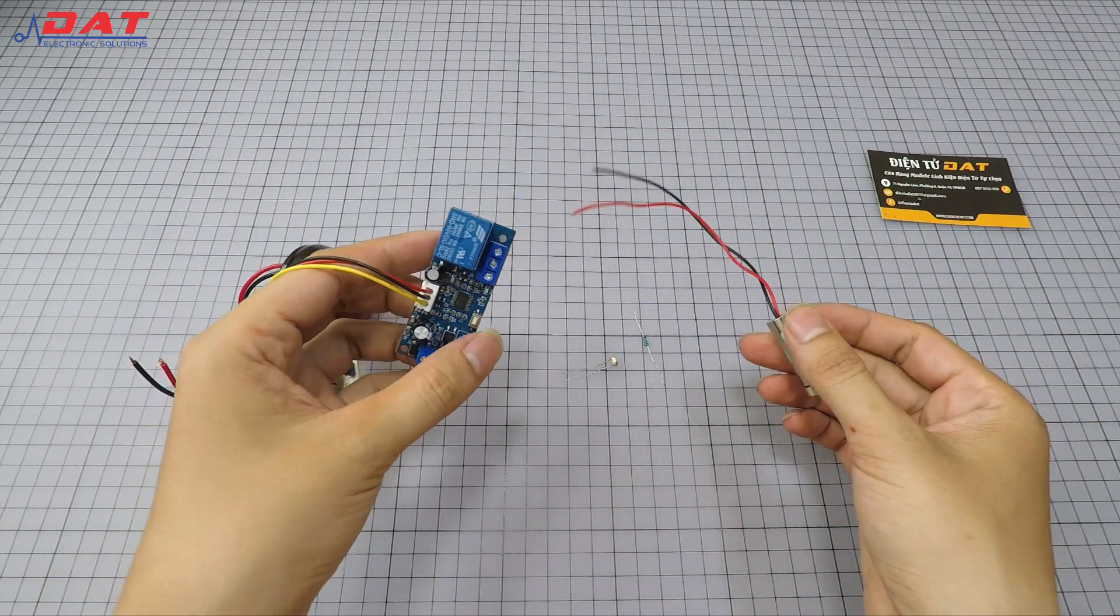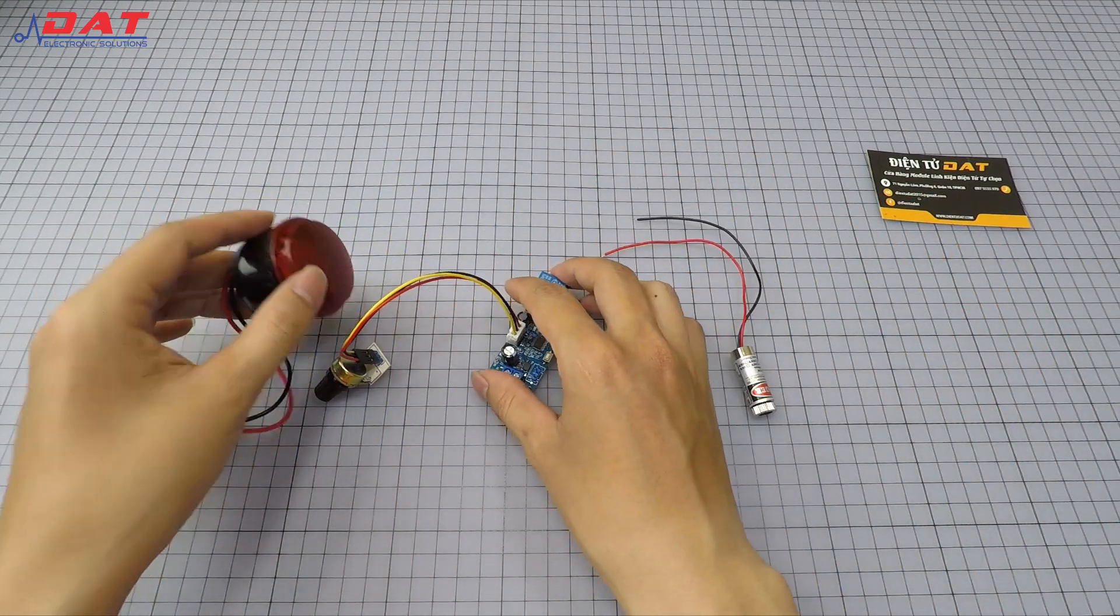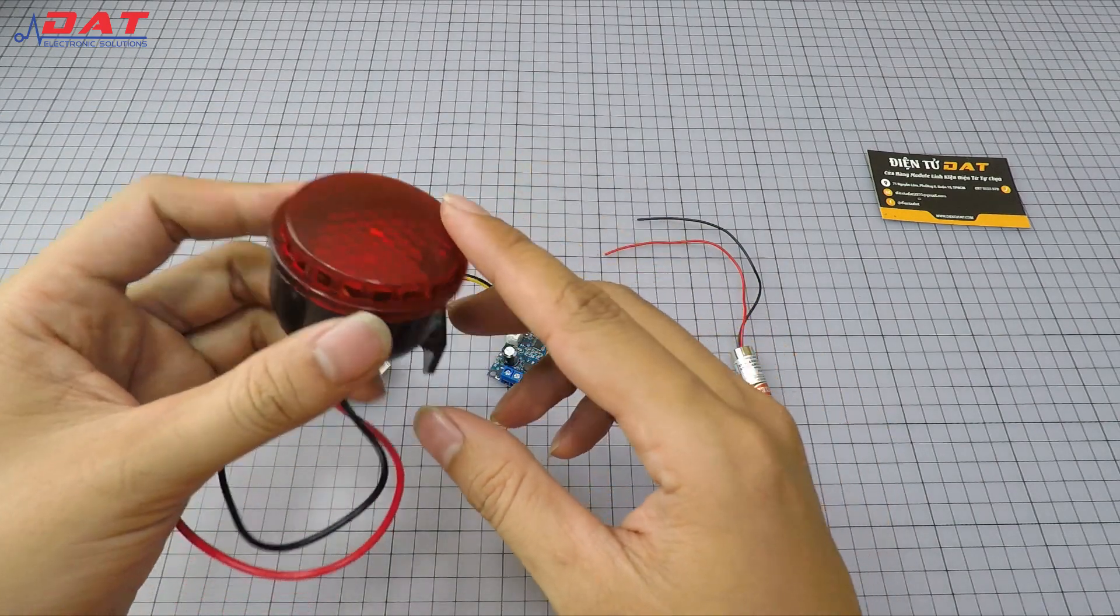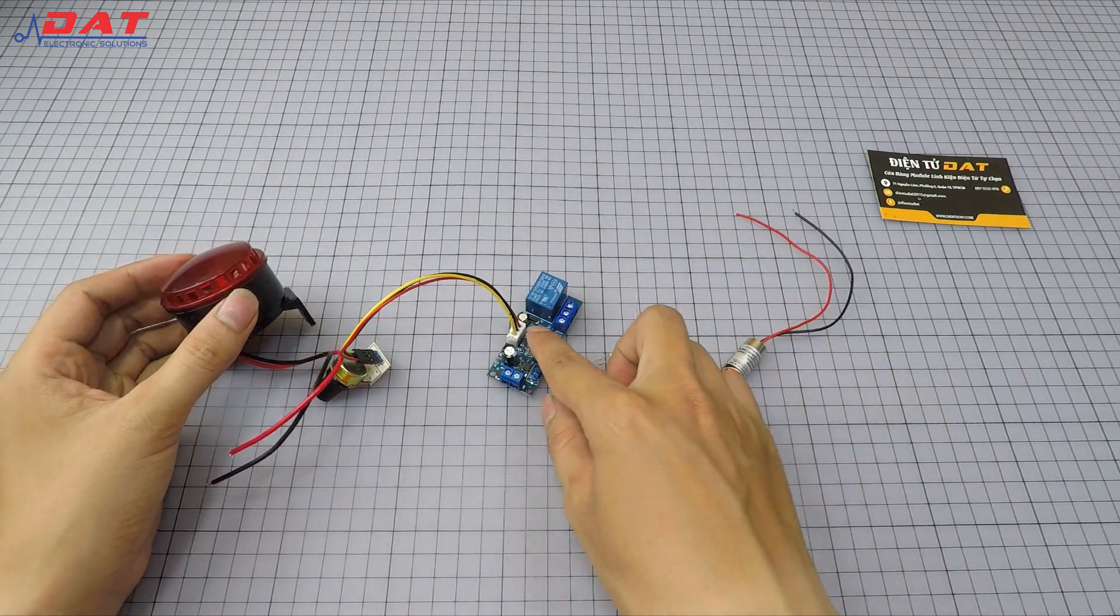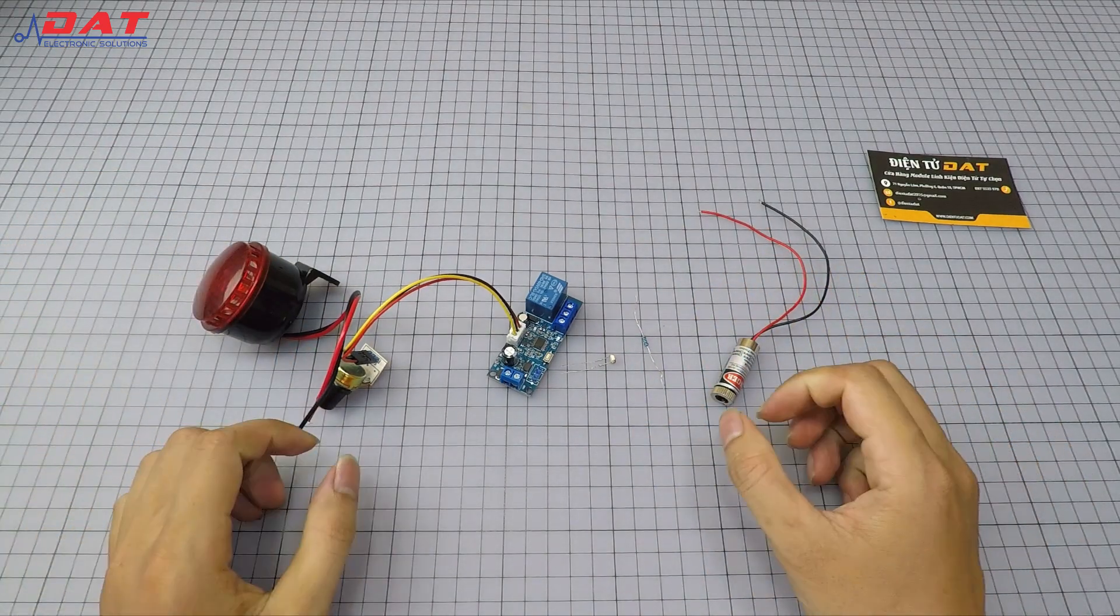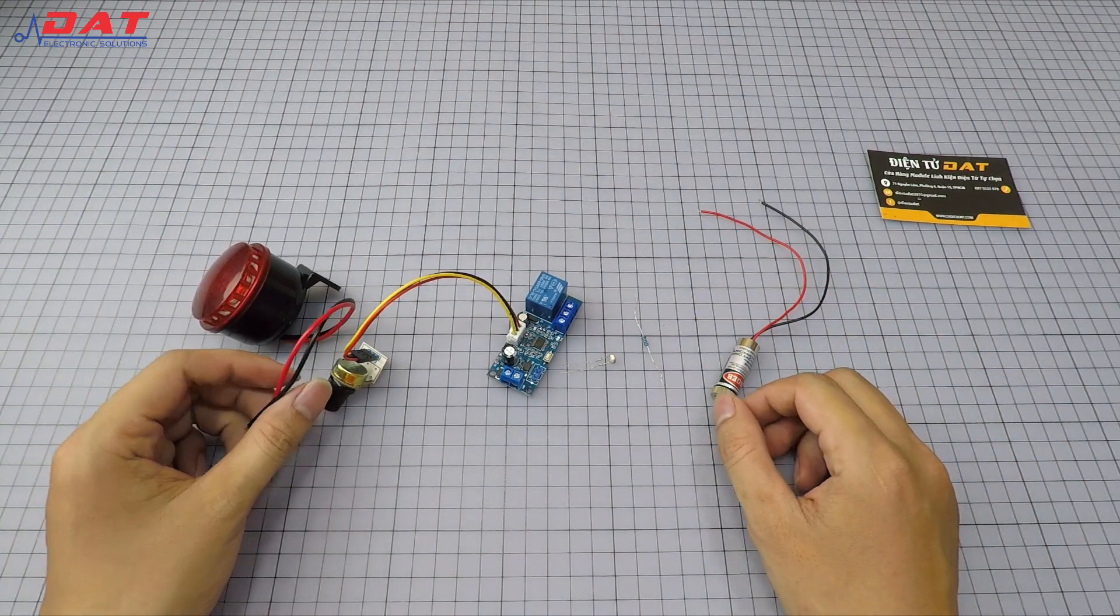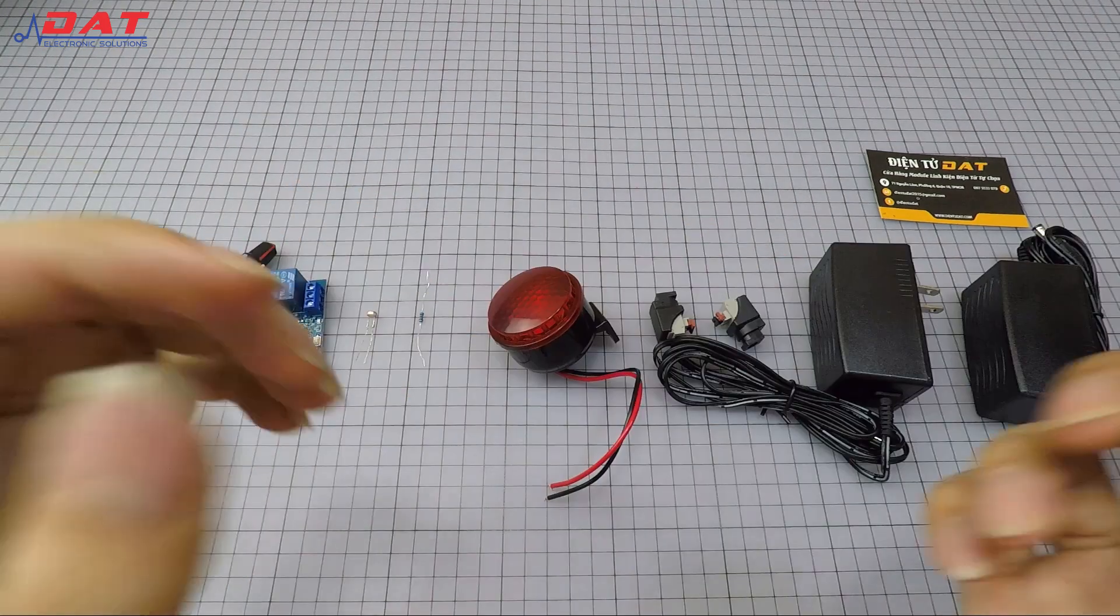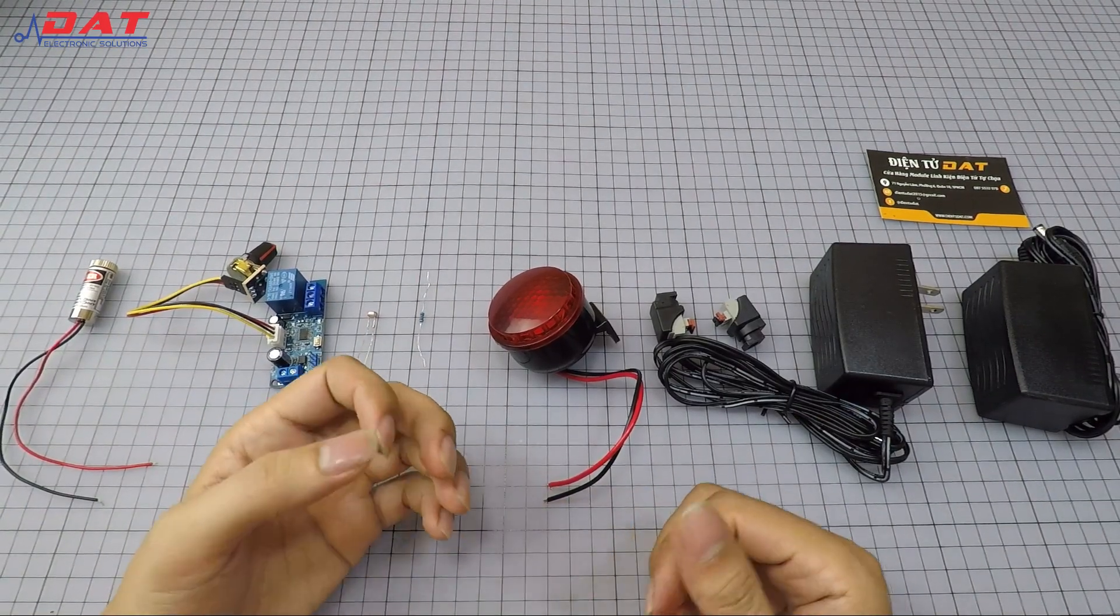This system will function as an alarm when someone moves and blocks the laser beam directed at the photoresistor. The circuit will activate a delay to sound the alarm, and the timing is adjustable. All these products are available on the điện tử DT website. I'll leave the link in the video description. In this video, I'll use the following components.